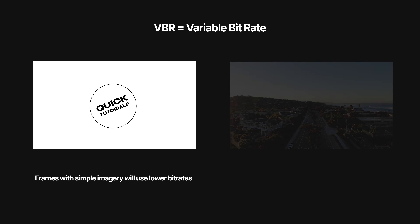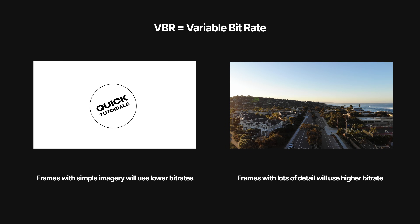Even though ProRes automatically sets the bitrate for you based on the video you're working with, it does not use a constant bitrate. It's actually using a variable bitrate, meaning that the number of bits used to encode each frame varies from one frame to the next. That's why all the data rates shown are the target data rates. The variability is usually pretty small though, so the actual data rate always ends up being very close to the target rate.